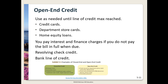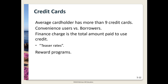Open-end credit generally refers to a store or general-use credit card, though home equity loans are included in this group. These types of credit have a set credit limit based on your income and employment information. You can spend up to your credit limit. If you do not pay the bill in full by the due date, you'll be charged interest, and it can be significant. Paying the minimum payment is courting disaster. Revolving check credit is basically a bank line of credit that allows you to draw against it as needed by writing a specific type of check.